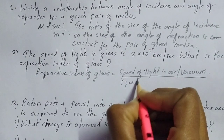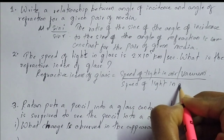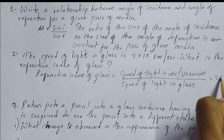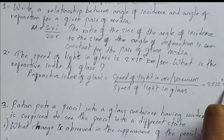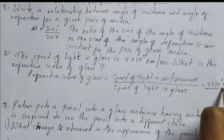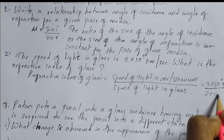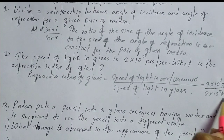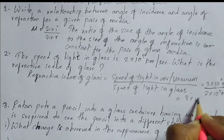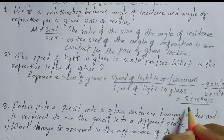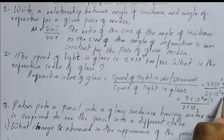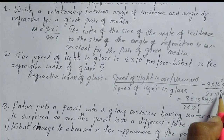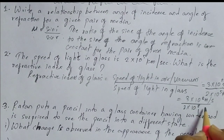The speed of light in air or vacuum is 3 × 10⁸ m/s, and the speed of light in glass is given as 2 × 10⁵ km/s. Since one value is in m/s and the other is in km/s, we need to convert km/s to m/s. Multiplying by 1000, 2 × 10⁵ km/s becomes 2 × 10⁸ m/s. So the calculation gives 3 × 10⁸ divided by 2 × 10⁸.